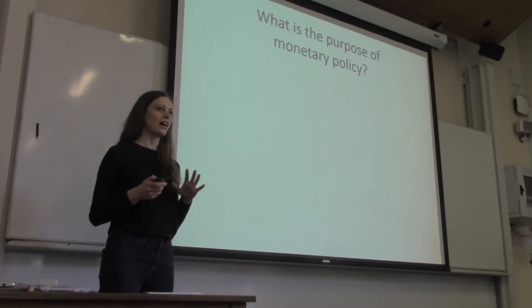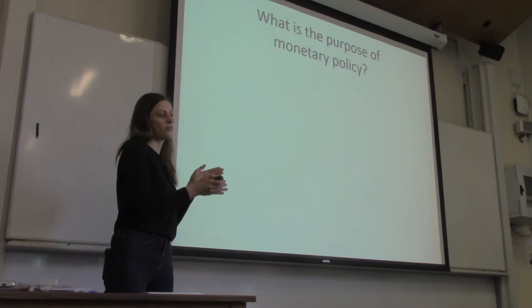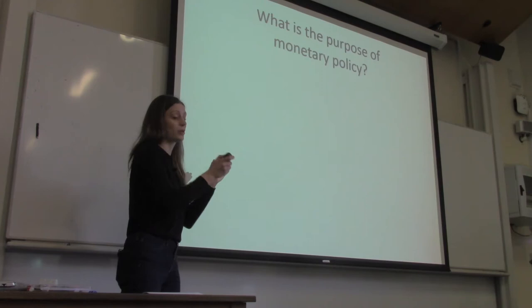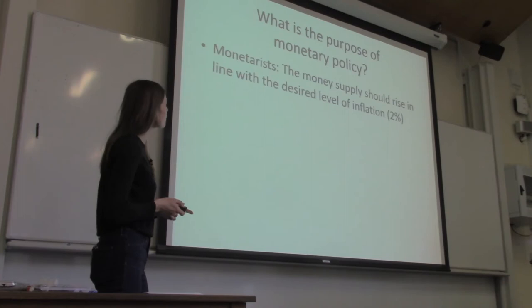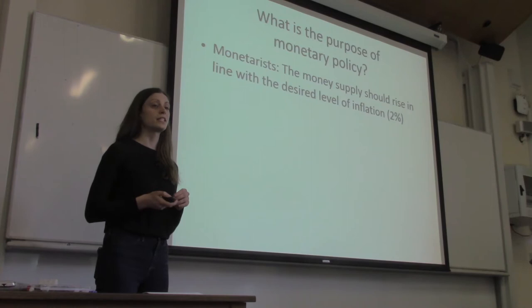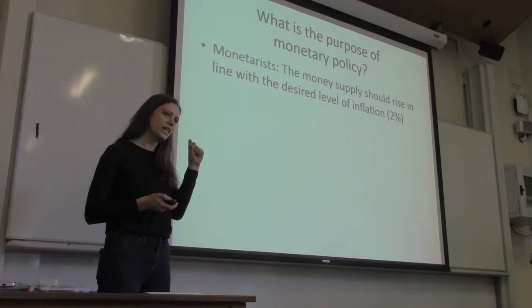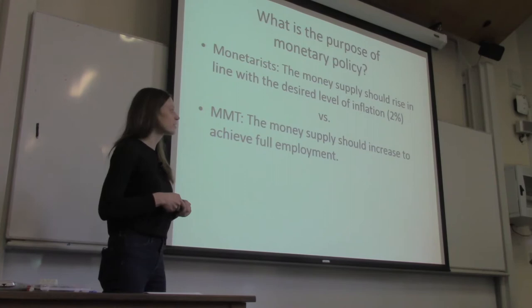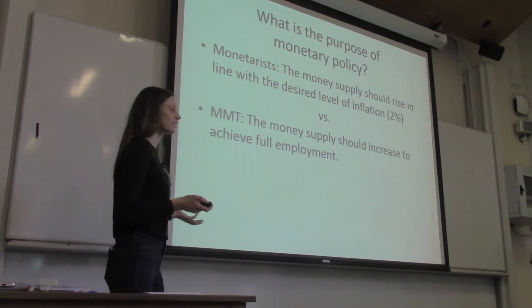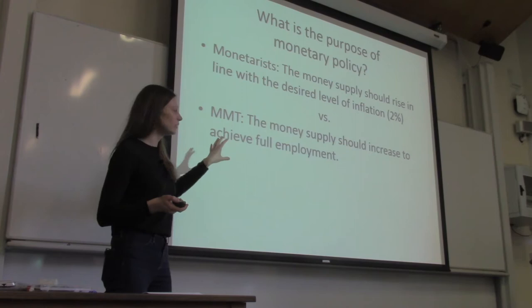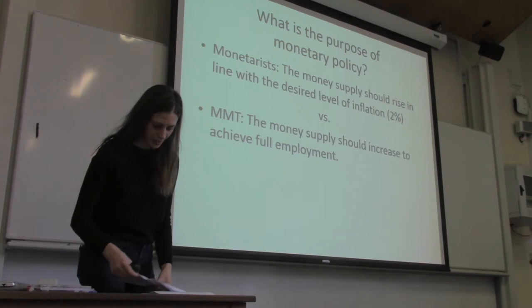The main question I'd like to ask is: what is the purpose of monetary policy, and how have different theories approached it? Monetarists say the money supply should rise in line with the desired level of inflation — about two percent. MMT says the money supply should increase to achieve full employment. That's a huge difference: a purely monetary objective on one side versus a full employment objective on the other.